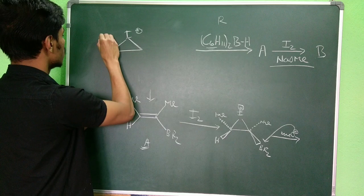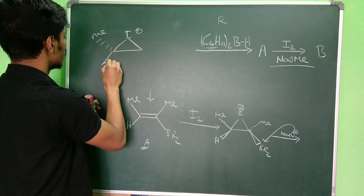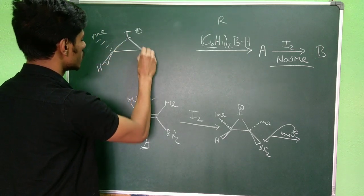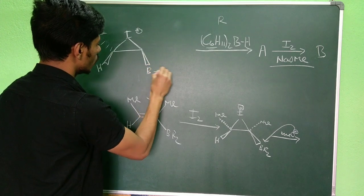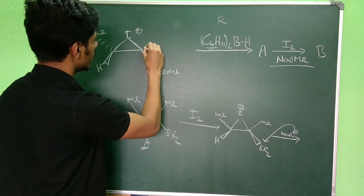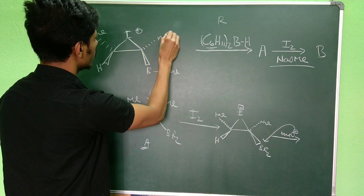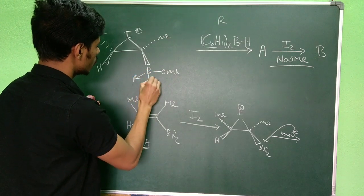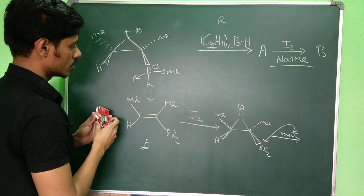If it does so, what you will get is very simple: here you have the methyl group, here you have the hydrogen, here you have boron with some OMe attacking here, here you have another methyl and these two R groups are there. Now this boron is negatively charged.